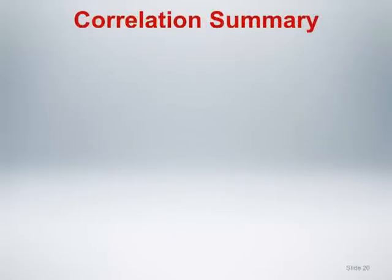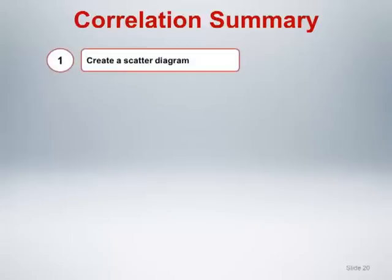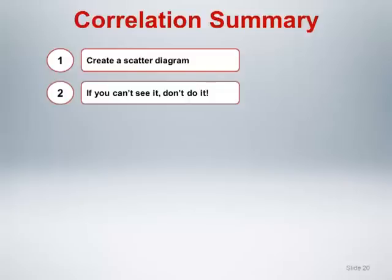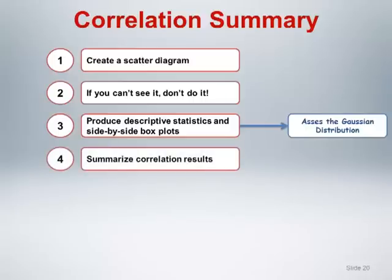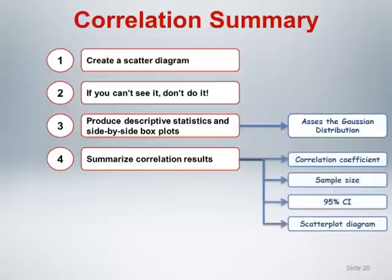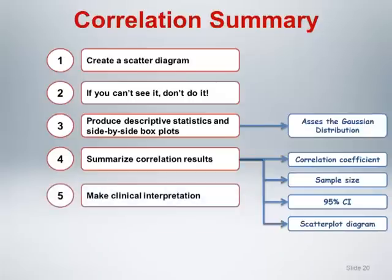Let's summarize the steps for calculating a correlation coefficient. First, create a scatter diagram. Second, if you can't see it, don't do it — if visual examination of the scatterplot isn't consistent with the estimated correlation coefficient, proceed with great caution. Third, produce appropriate descriptive statistics and side-by-side box plots to assess the Gaussian distribution assumption. Fourth, when summarizing correlation results, include the correlation coefficient, the sample size, the 95% confidence interval, and potentially a scatterplot diagram. Fifth, as always, remember to provide an interpretation of the results from a clinical perspective.